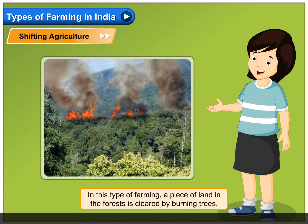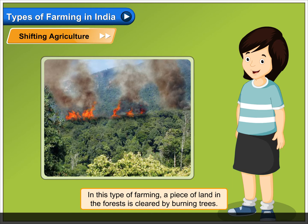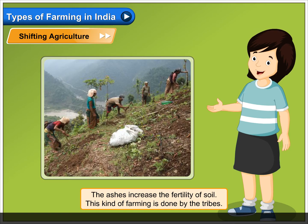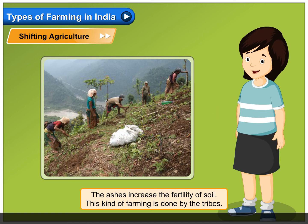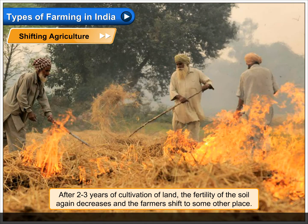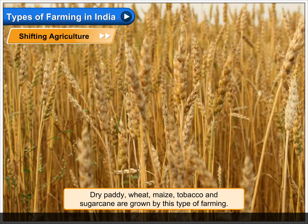Shifting agriculture: in this type of farming, a piece of land in the forests is cleared by burning trees. The ashes increase the fertility of the soil. This kind of farming is done by tribes. After two to three years of cultivation, the fertility of the soil decreases and the farmers shift to some other place.